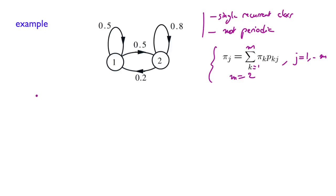So what we have is pi 1 equals pi 1 times 0.5 plus pi 2 times 0.2. That's the first equation that corresponds to j equals 1. Now for j equals 2, pi 2 equals pi 1 times 0.5 plus pi 2 times 0.8. So we have a system of two equations with two unknowns, pi 1 and pi 2.